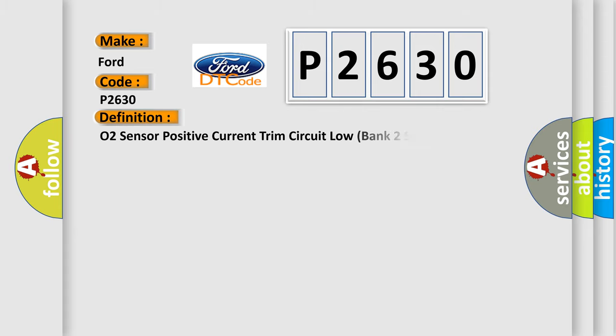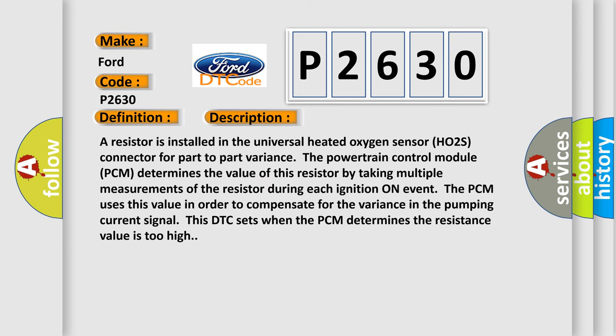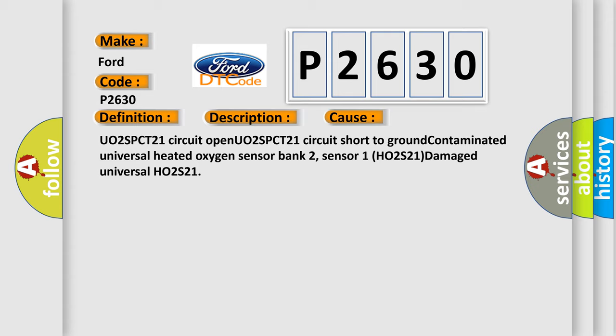The basic definition is: O2 sensor positive current trim circuit low, bank 2 sensor 1. A resistor is installed in the universal heated oxygen sensor (HO2S) connector for part-to-part variance. The powertrain control module (PCM) determines the value of this resistor by taking multiple measurements during each ignition-on event. The PCM uses this value to compensate for variance in the pumping current signal. This DTC sets when the PCM determines the resistance value is too high. This diagnostic error occurs most often due to: U02 SPCT-21 circuit open, U02 SPCT-21 circuit short to ground, contaminated universal heated oxygen sensor bank 2 sensor 1 (HO2S21), or a damaged universal HO2S21.